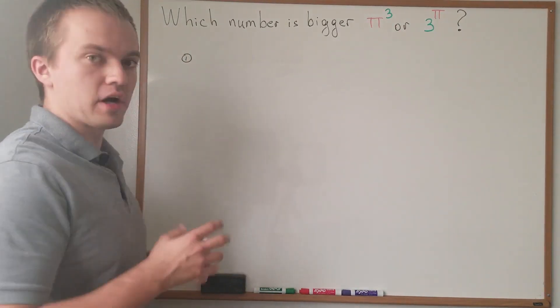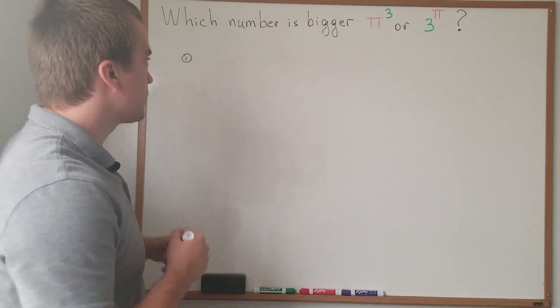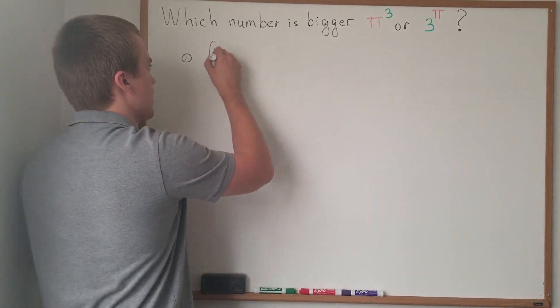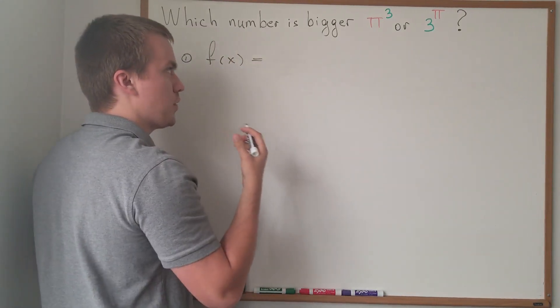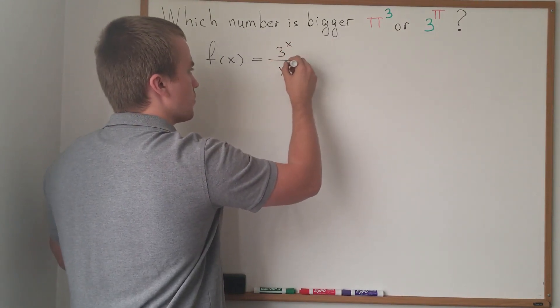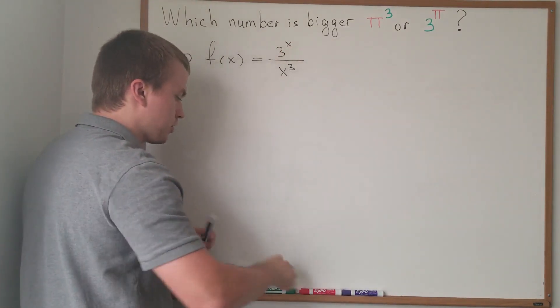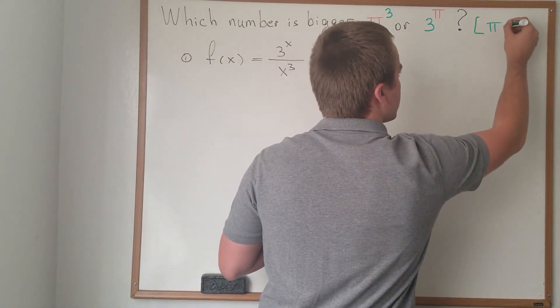To this problem, there are a couple of approaches, so let me show one of the approach. And for this approach, we need to consider function f(x). And I'm going to write my function f(x) as 3 to the power of x over x to the power of 3. So, in other words, what we did, we just replaced our π with x.